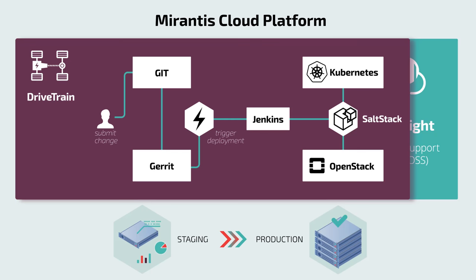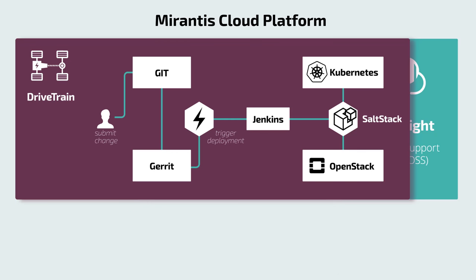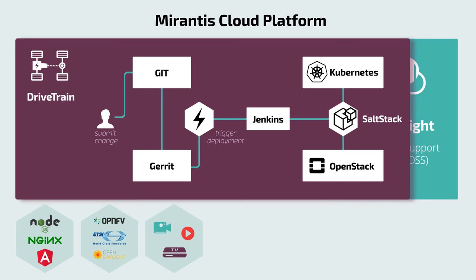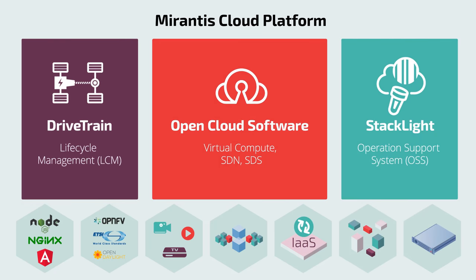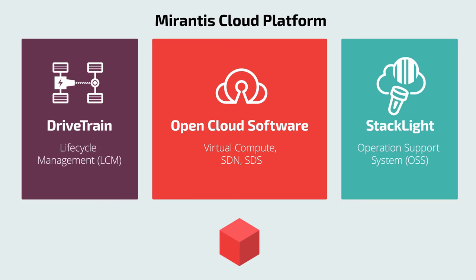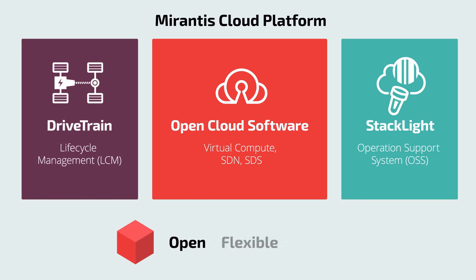Drivetrain can be configured to deploy MCP in a wide range of reference configurations optimized for web workload hosting, telco-grade NFV, media processing, and other demanding applications. It can also be used to onboard VM and container workloads and to deploy and lifecycle-manage complex applications on top of IaaS, container orchestration, or bare metal. One metadata model for everything — one source of truth for cloud configuration: open, flexible, repeatable.